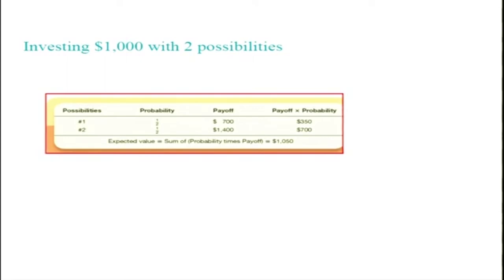In Case 1, assume that for $1,000 you can purchase a stock whose value is equally likely to fall to $700 — with a probability of 0.5, meaning when the stock market is down it can fall to $700 — or rise to $1,400. We refer to the amount you could get back as the investment's payoff. The probability of the stock falling from $1,000 to $700 is 0.5, so the payoff times probability is 0.5 × $700 = $350.